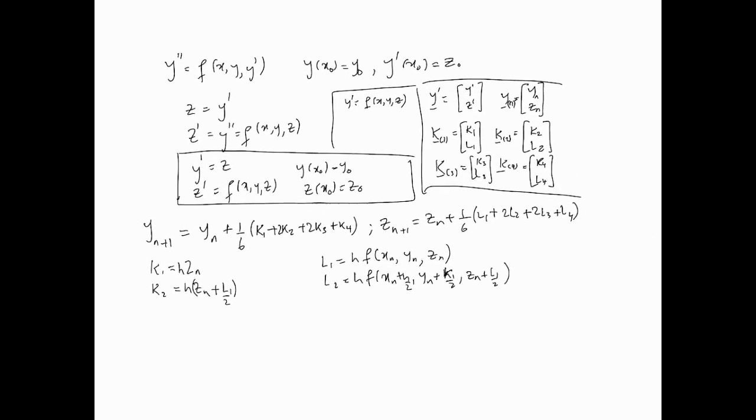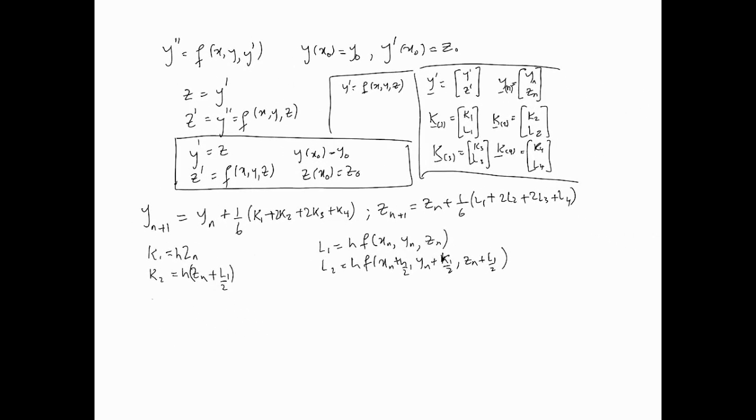k3 is h times (zn plus L2 over 2). And L3 is h times f(xn plus h over 2, yn plus k2 over 2, zn plus L2 over 2). Remember, y and k together, z and L together. So you add the k parts to the y, and the L parts to the z.